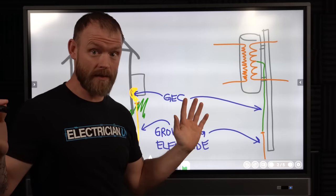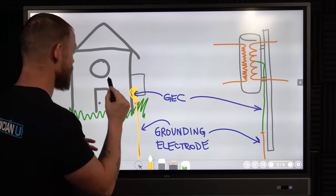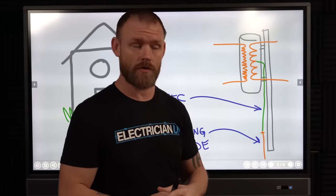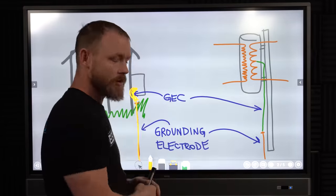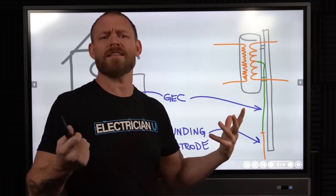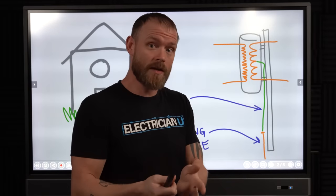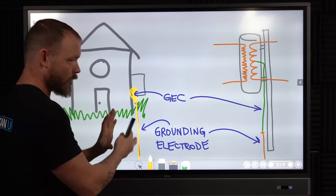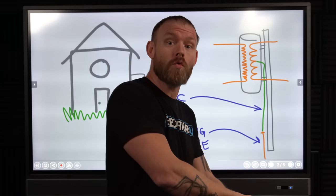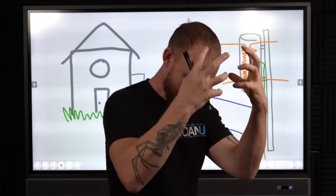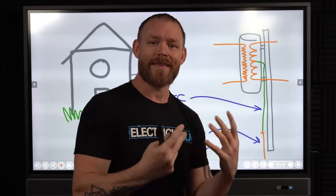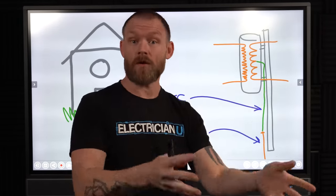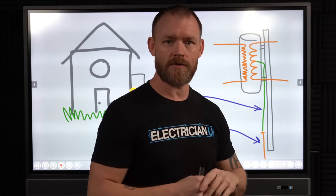Electrodes can be a lot of different things. Looking at Article 250 in code, they talk about metal underground piping systems, large metal underground structures, ground rods, ground plates you can bury — all kinds of things you can use as a grounding electrode. Sometimes we use the rebar in a slab. The conductor you run to that large piece of metal to establish continuity with earth is the grounding electrode conductor, and its purpose is entirely different from equipment grounding conductors, or EGCs, which we'll get to in a minute.